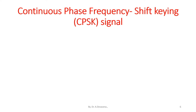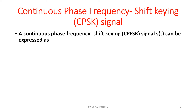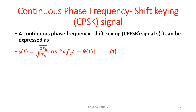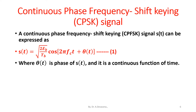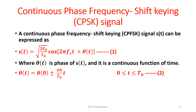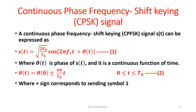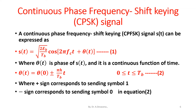The continuous phase frequency shift keying signal S(t) can be expressed as S(t) = sqrt(2 * E_b / T_b) * cos(2π * F_c * t + θ(t)), which is equation 1, where θ(t) is the phase of S(t) and it is a continuous function of time. θ(t) = θ(0) ± (π * h / T_b) * t, for 0 ≤ t ≤ T_b. This is equation 2, where the plus sign corresponds to sending symbol 1 and the minus sign corresponds to sending symbol 0.